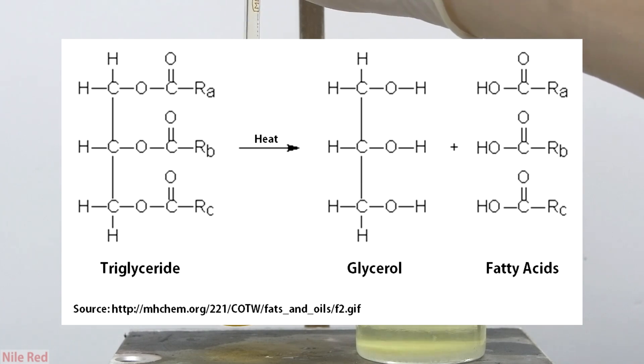Most animal fat is stored as triglycerides, which comprises of a glycerol backbone and three fatty acids. When the animal fat is heated, the triglyceride splits into the fatty acids and the glycerol, and it's the glycerol that breaks down to form the acrolein.